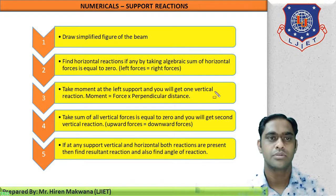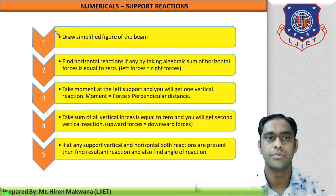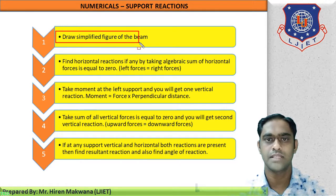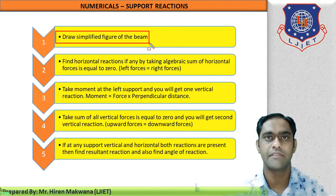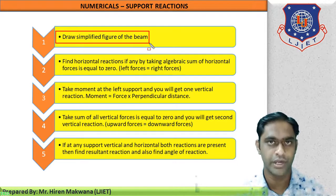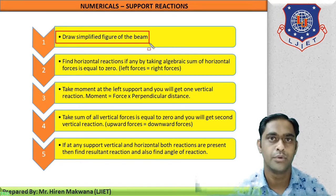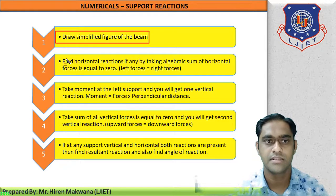In step number one, you have to draw a simplified figure of the beam. This means you have to convert all UDL, UVL, etc. into point loads. Moreover, you have to remove the supports and replace them with only the reactions at the supports.